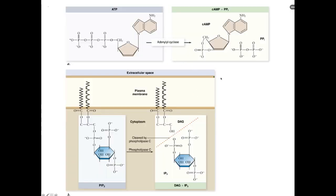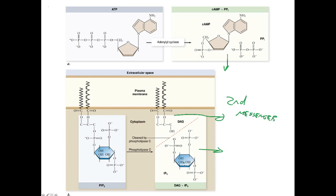Let's return to our second messengers: cyclic AMP, inositol triphosphate (IP3), and diacylglycerol. These are all second messengers. Let's start with inositol triphosphate.